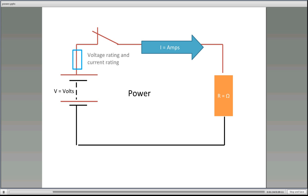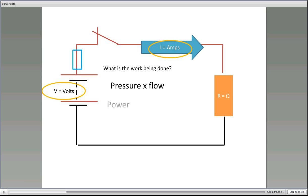So the fuse will have a voltage rating and current rating. The resistor, the load will have a power rating at a certain voltage rating. So power is the rate at which work is done or energy is expended or being converted. So what is the work being done here? So we have pressure in our circuit. We have flow. So the pressure times our flow gives us the power which is voltage times our current.